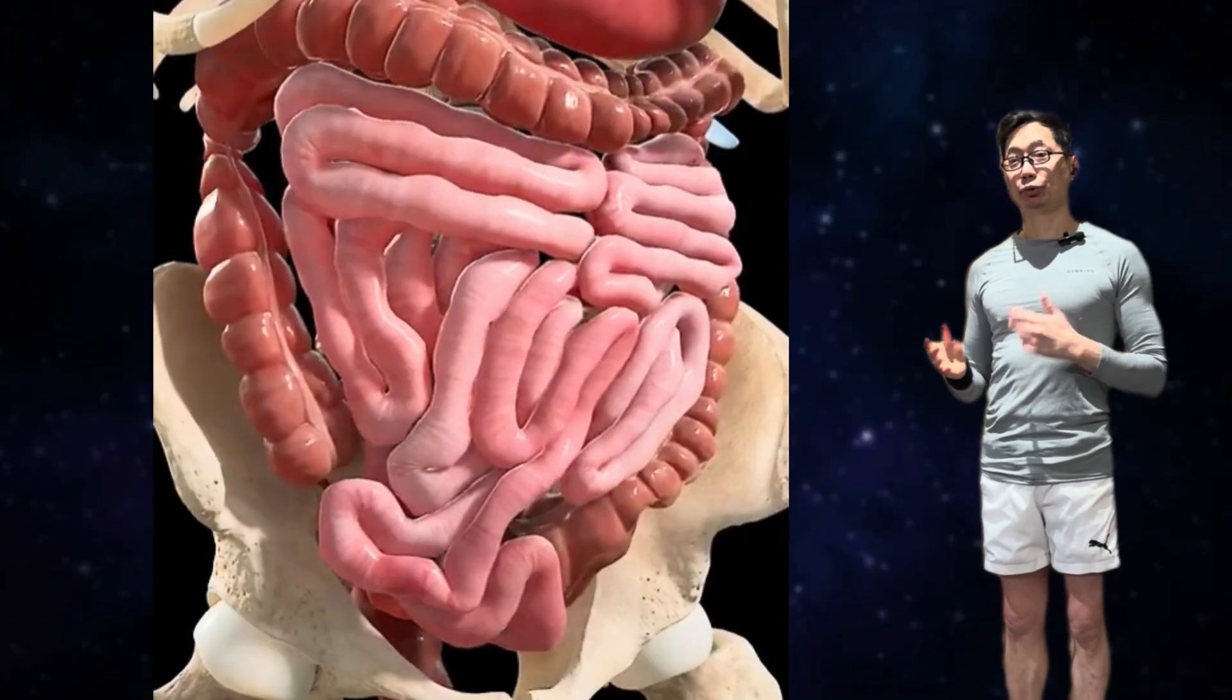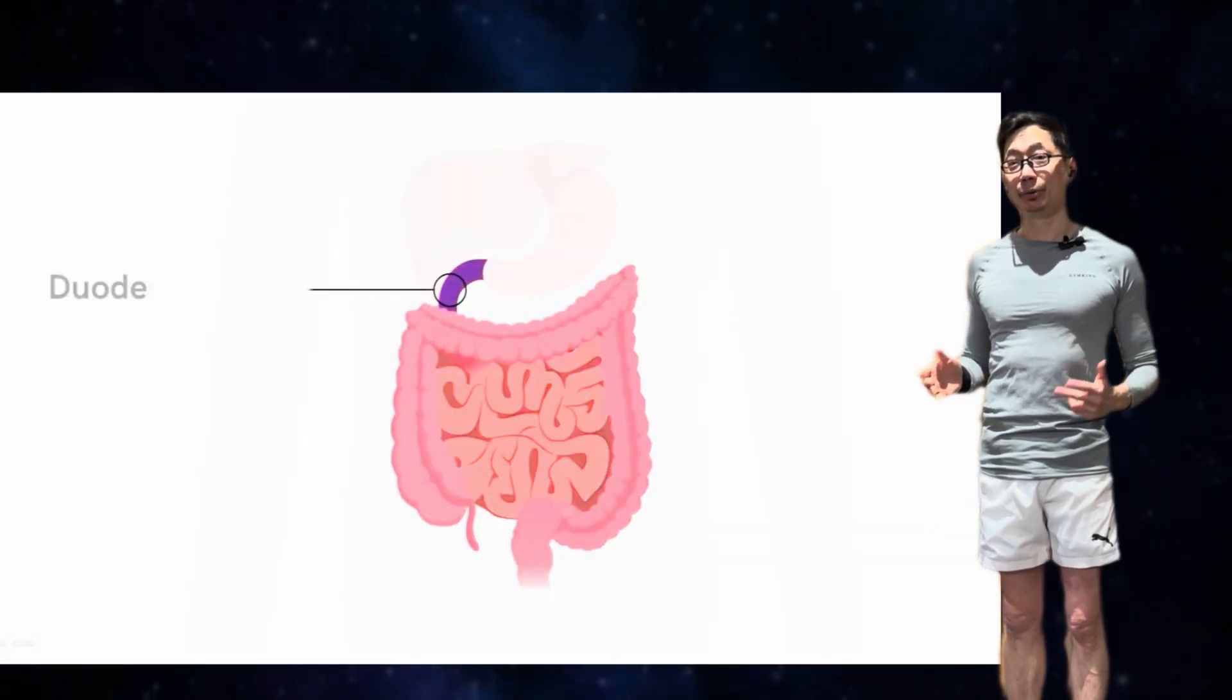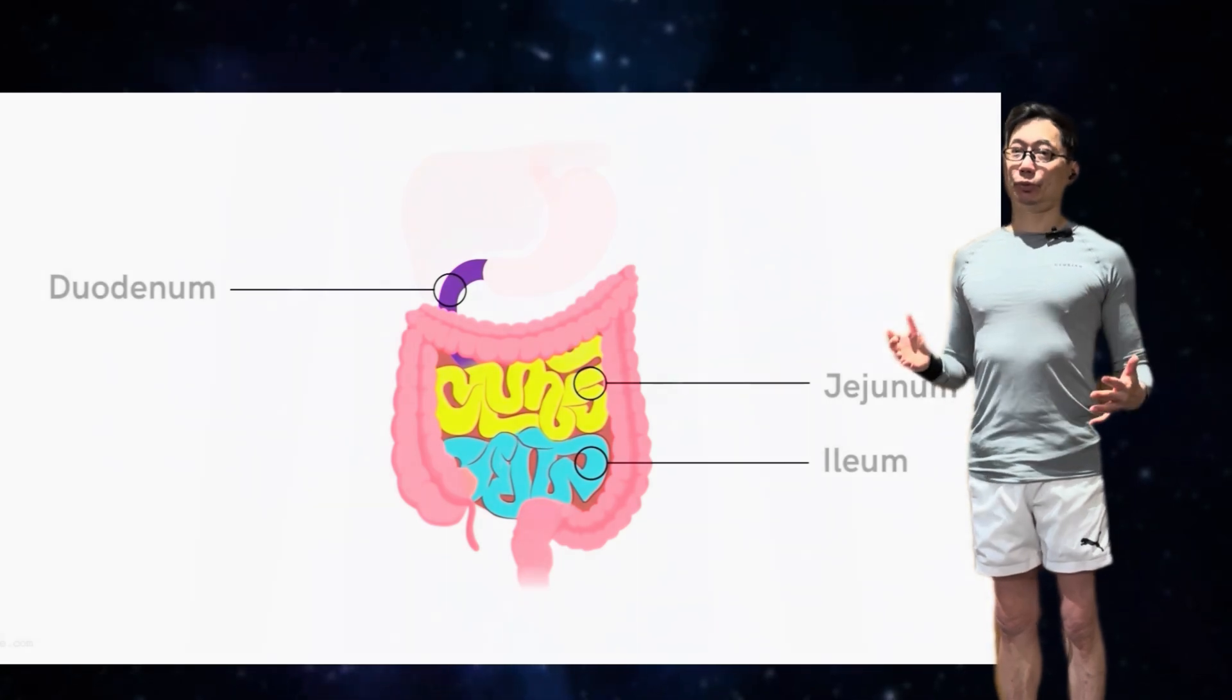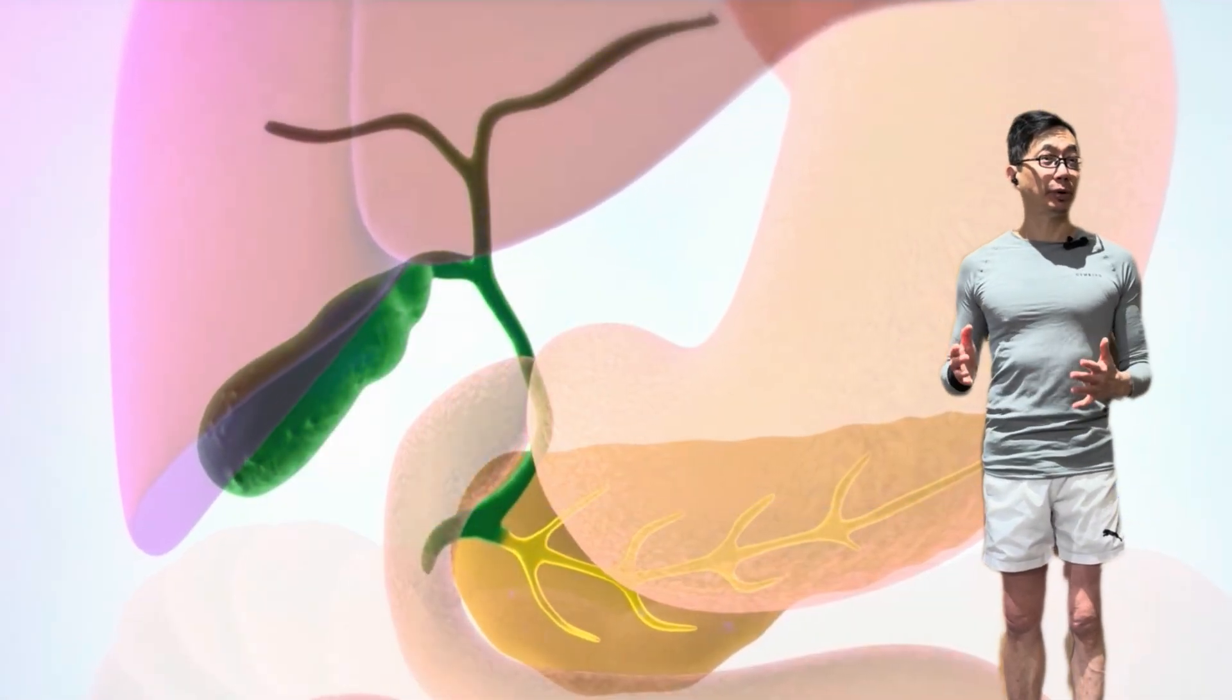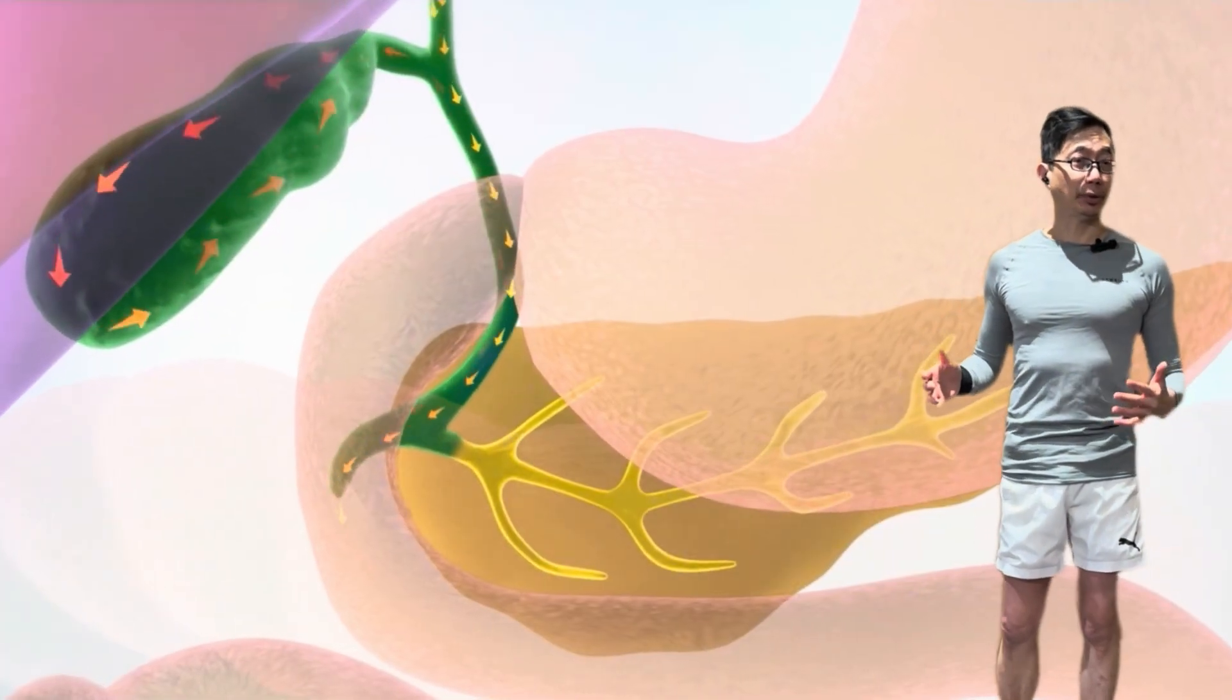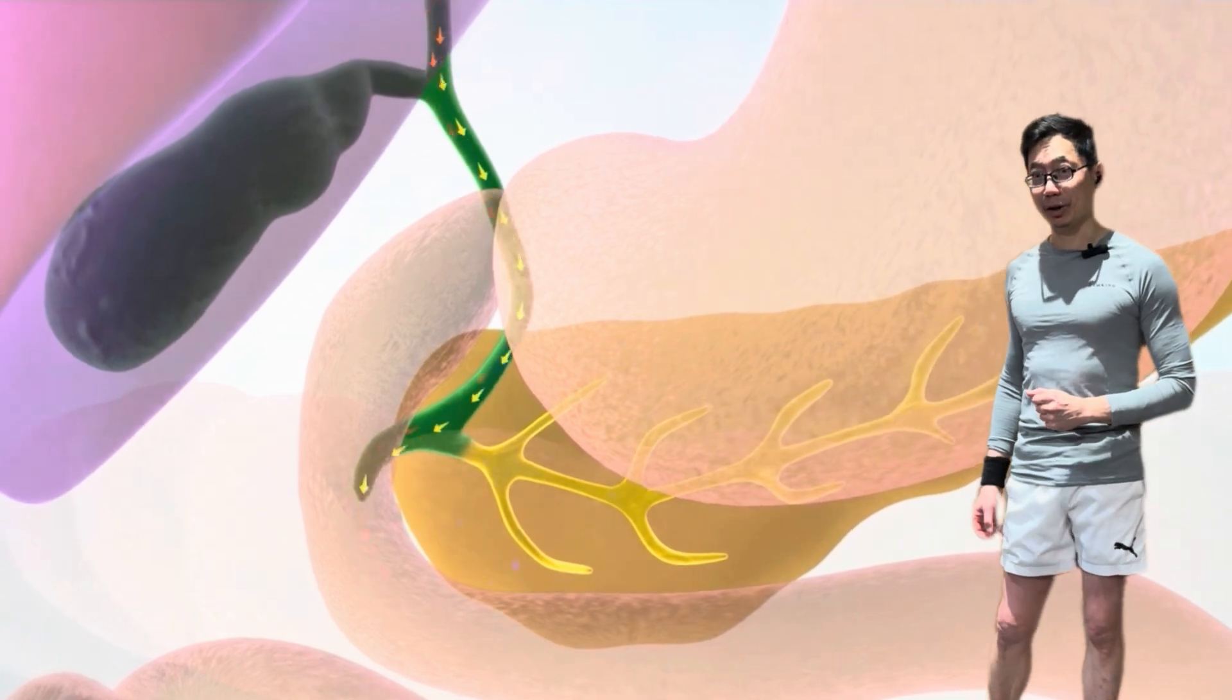Now once we're in the small intestine, we're going to find that it is divided into three different segments, the duodenum, jejunum, and the ileum. Now the duodenum connects with the common bile duct, which receives bile from the liver and the gallbladder, as well as secretions from the pancreas, which includes bicarbonate as well as pancreatic enzymes.